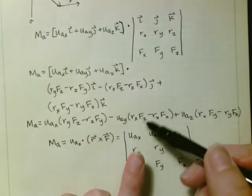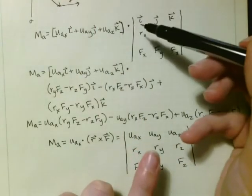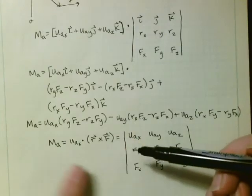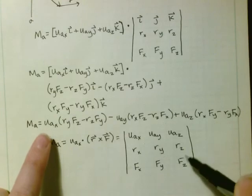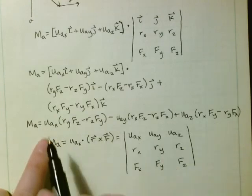So instead, now we've got u_ax. So you're multiplying instead of by i, by u_ax. So that's what we just proved. So it's u_ax times (r_y f_z minus r_z f_y). It's the same thing.